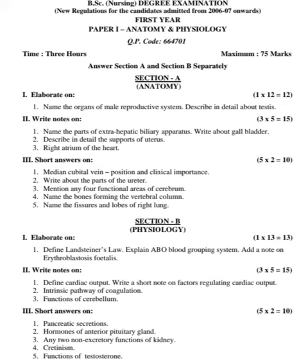Short answers on 2 marks questions. First: median cubital vein — position and clinical importance. Second: write about the parts of the ureter. Third: mention any four functional areas of the cerebrum. Fourth: name the bones forming the vertebral column. Fifth: name the fissures and lobes of the right lung.